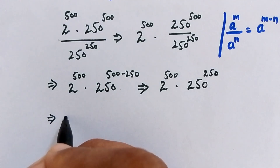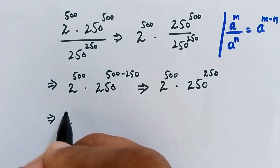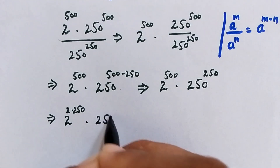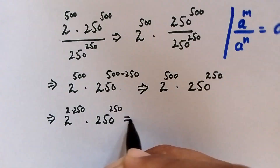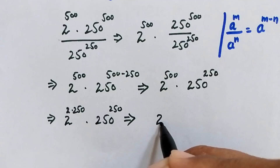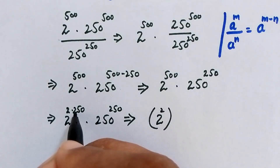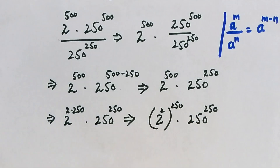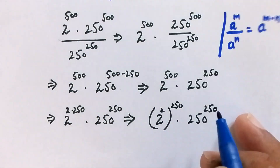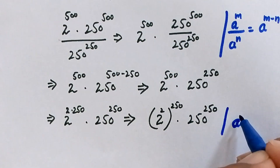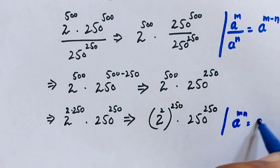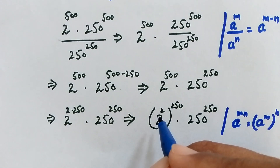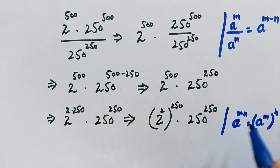In the next step, 500 is also equal to 2 times 250, so we have 2 to the power of (2 times 250) times 250 to the power of 250. We apply the rule a to the power of (m times n) equals a to the power of m, to the whole power of n. Therefore this becomes 2 squared to the power of 250.